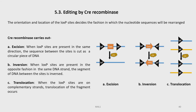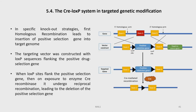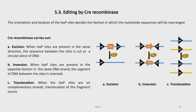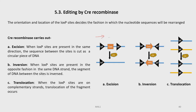How does Cre recombinase carry out editing? The orientation and location of the LoxP sites decides the fashion in which the nucleotide sequences will be rearranged. Cre recombinase carries out excision, inversion, and translocation. In excision, when LoxP sites are present in the same orientation in the same DNA strand, the segment of DNA between the sites is excised. When LoxP sites are in opposite directions in the same DNA strand, the segment is inverted. While in translocation, when LoxP sites are on complementary strands, translocation of the fragment occurs.